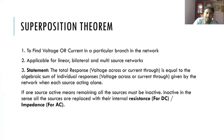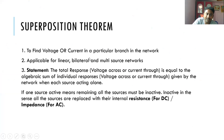As I mentioned in my previous class, there are three things to consider. First, the purpose: this theorem is used to find voltage or current — we can find both. The theorem statement itself says it can be used to find voltage across or current through a particular branch in the network. Second, it is applicable for linear, bilateral, and multi-source networks.